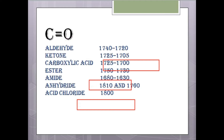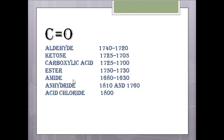Before going to the IR spectra, we need to consider that a carbonyl group is present in many functional groups. It may be present in aldehyde, ketone, carboxylic acid, ester, amide, anhydride, and acid chloride. So if we see peaks in the carbonyl region, any of these functional groups may be present.